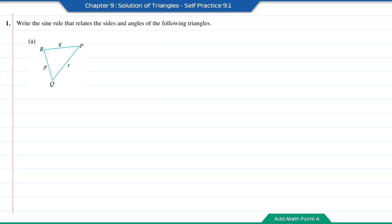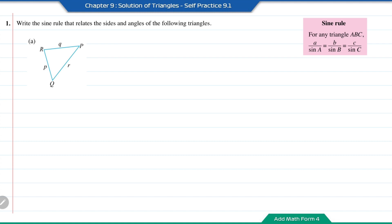Practice 9.1, question number 1: Write the sine rule that relates the sides and angles of the following triangles. The sine rule states that the ratio of lengths of sides to the sine of the opposite angle are the same.